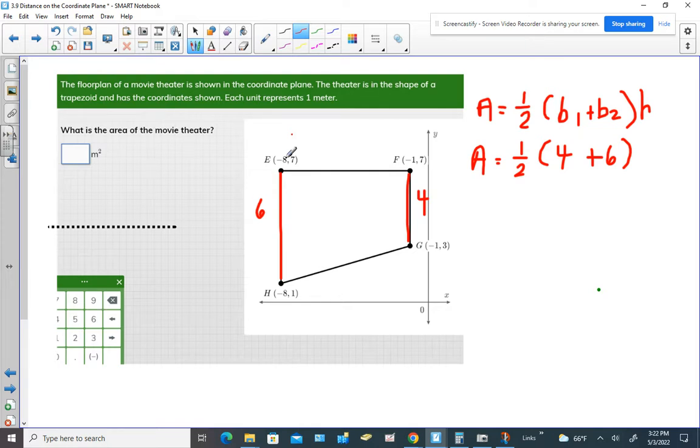Since they're in the same quadrant, we will be subtracting the absolute values. So the absolute value of this is 8. The absolute value of that is 1. 8 minus 1 would give us 7. Alright, so that's the height.